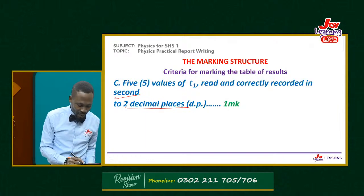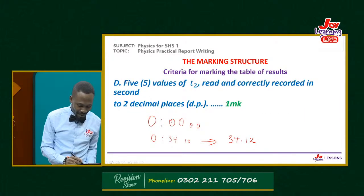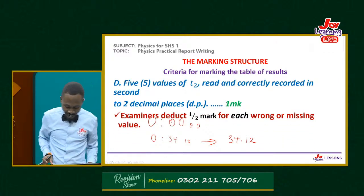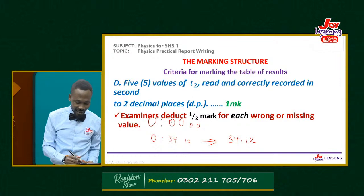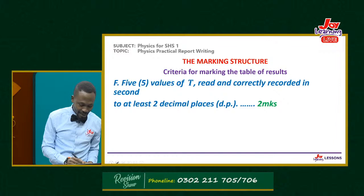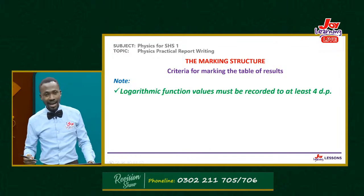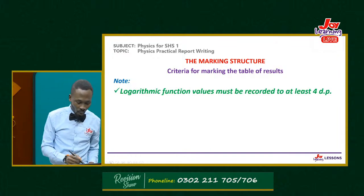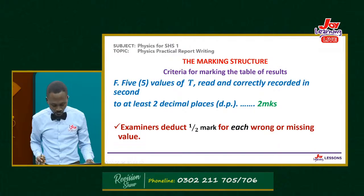What are the dimensions for speed and velocity? LT to the power minus one. Wow — I am applauding you. You have done really, really well. I am very sure you will be given a reward. Both speed and velocity have the same units — metres per second — and they share the same dimension: LT⁻¹. Very important. That is very good.